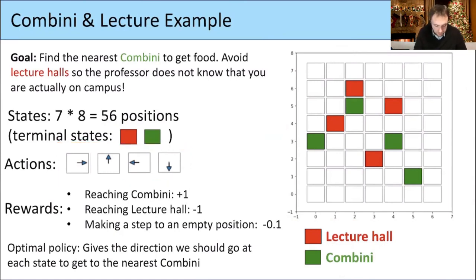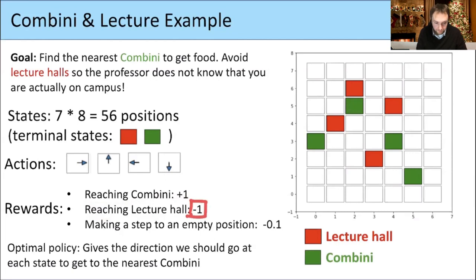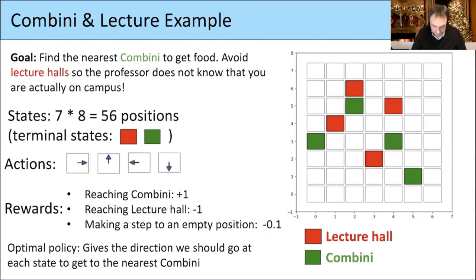The reward for entering a green cell is plus one because we want to go to a Konbini. Entering a red cell gives minus one. Making just one step to an empty cell is minus 0.1 because walking makes us tired. What we want is to start somewhere and find the shortest way to the next Konbini.